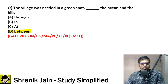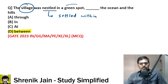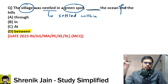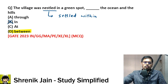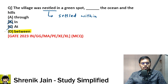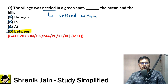Why? The first step is to understand the meaning of the word. 'Nestled' means settled within. So your village is settled within a green spot, dash the ocean and the hills. It cannot be 'in the ocean' — how can you have a village in the ocean? So B is wrong. It cannot be 'at the ocean' either, so C is wrong. 'Through the ocean and the hills' doesn't make sense. 'Between the ocean and the hills' makes sense. Therefore D is correct. Easy question.